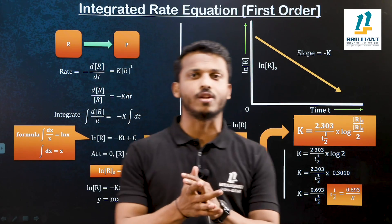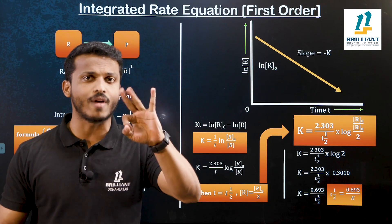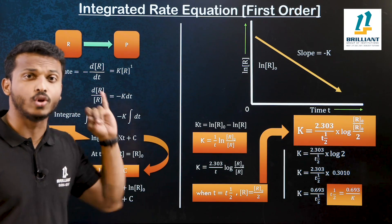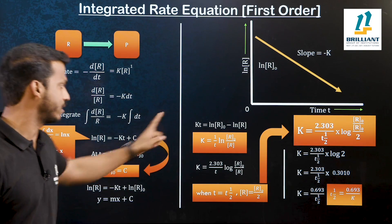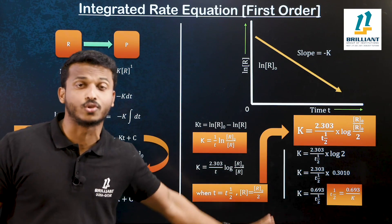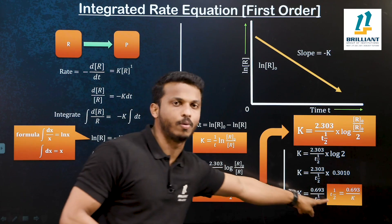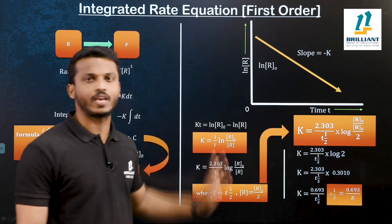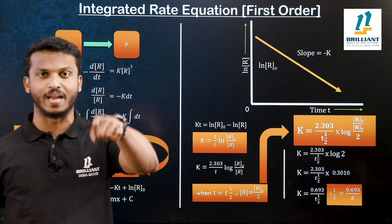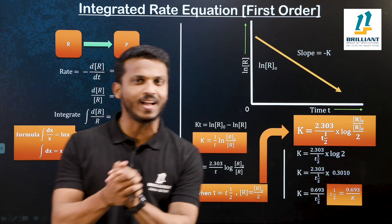This is the integrated rate equation for first order reaction from the chapter chemical kinetics. Our major purpose covered three things: to calculate K, the rate constant — the expression is K equals 2.303 by t into log(R₀/R); the expression for T half, the half life, is T half equals 0.693 divided by K; and the graphical method — x-axis is time, y-axis is ln R, slope is minus K, and y-intercept is ln R₀. Hope you are clear. Thank you all, bye.